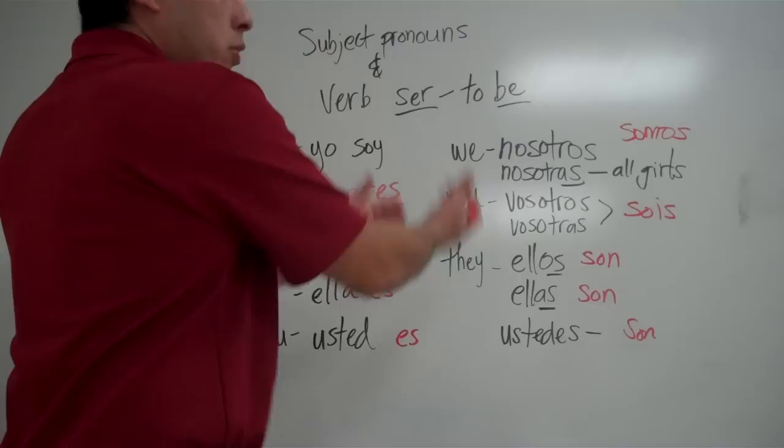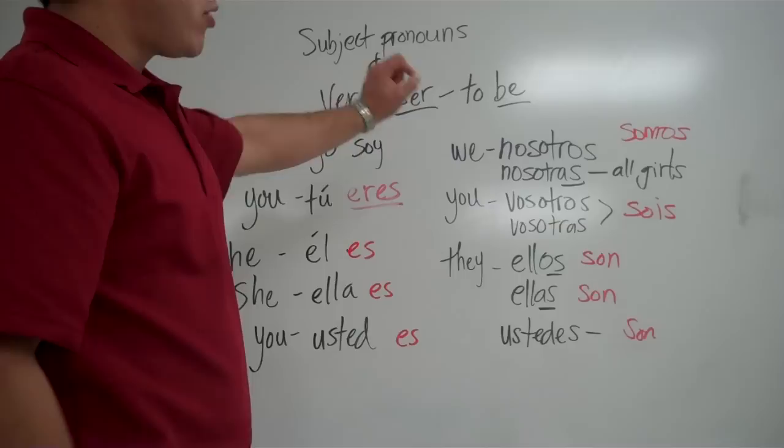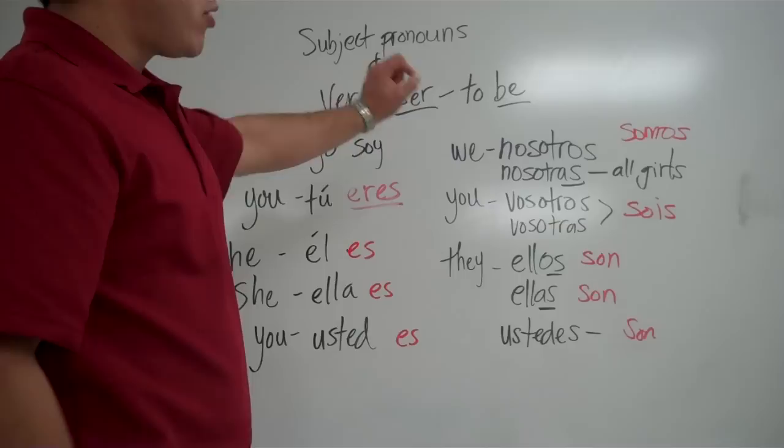Okay. So, what you need to do for this is basically you just need to memorize this. Practice this over and over again. What goes with yo? Soy. What goes with tú? Eres. What goes with él? Es. Ella es. Ustedes. Nosotros somos. Vosotros sois. Ellos, ellas, ustedes son. We're going to practice this a little bit in class. I'm going to teach you a song to help you remember what these conjugations are. But this is vital. You have to know this. Okay. Watch this as many times as you need to. And we'll be using it in class.